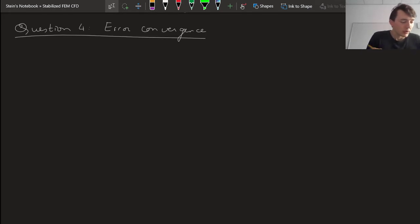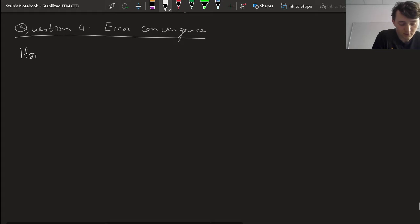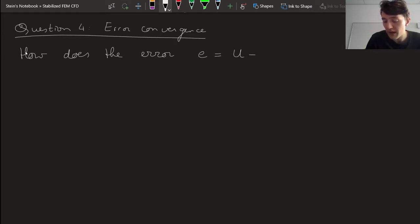Okay, so the question of error convergence revolves around how does the error u minus u_h decrease with h? How does the error which we define as e is equal to the true solution u minus our discrete solution u_h decrease with h, and h is our mesh size?